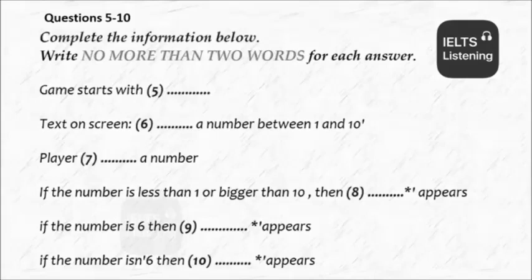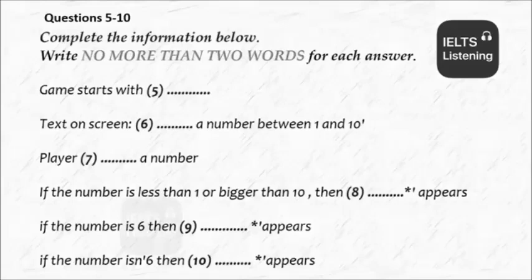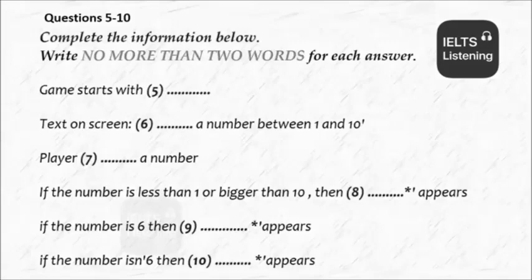Then what happens next depends on what the number is. So we've got '40 IF I is less than 1 or IF I is greater than 10, then PRINT bad choice.' So if they type 0 or 11, that appears on the screen. Exactly. And then this next line takes them back to where it asks them to type in a number between 1 and 10 — that's line 50. And line 60 says 'IF I equals 6, then PRINT correct.' So if they've typed 6, they've got it right. And if they haven't typed 6, which is the next line, then 'try again' comes up on the screen, and that takes them back to where they choose another number. It's clever.